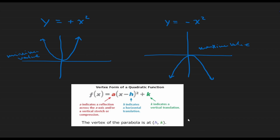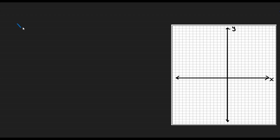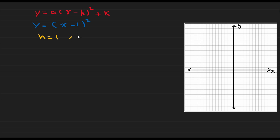Now let's learn how to graph using the vertex form. If we have y = (x - 1)², by comparing to the vertex form y = a(x - h)² + k, we find h = 1 and k = 0, since there is no number outside the parentheses. This means the vertex of this parabola is at (1, 0), and the parabola has been translated 1 unit to the right from the parent function y = x².